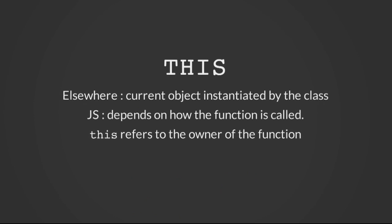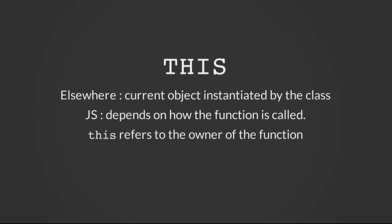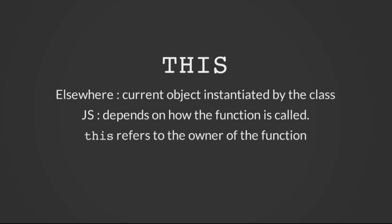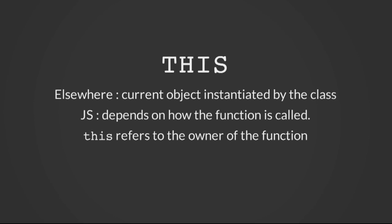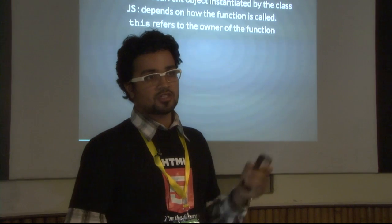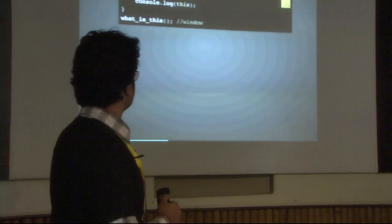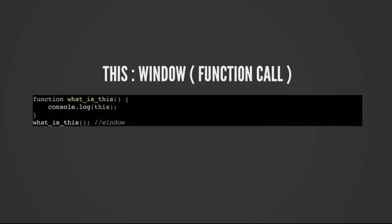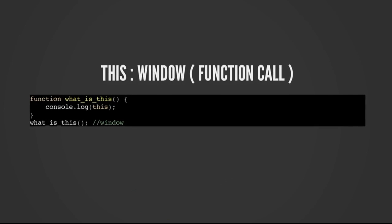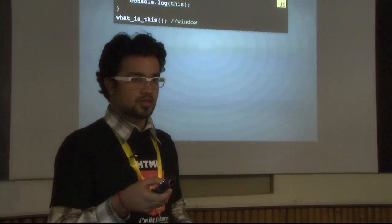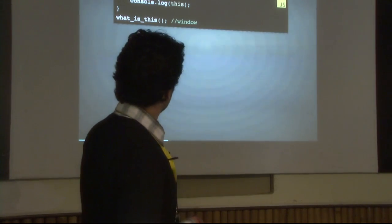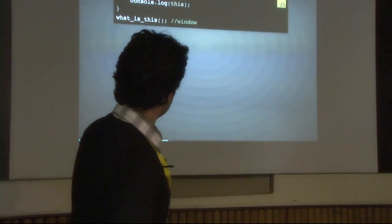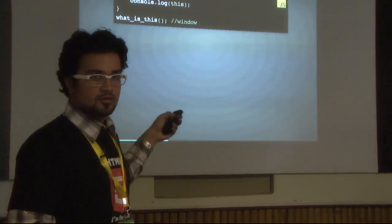Had it been any other language — Ruby, Python — `this` would be the object, as simple as that. But it's very confusing in JavaScript. It depends on how the function is called and also on the owner of the function. If I have a simple function `whatIsThis()`, then `this` refers to window, because in the browser, window is the global object. It depends on the owner of the function — in this case it's owned by the root or global object.